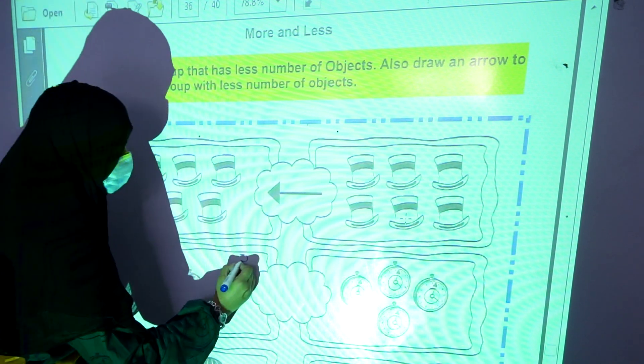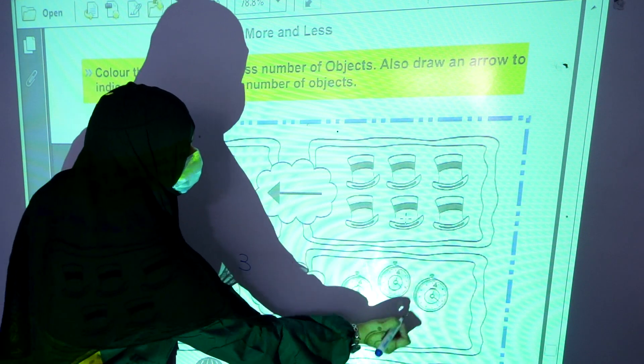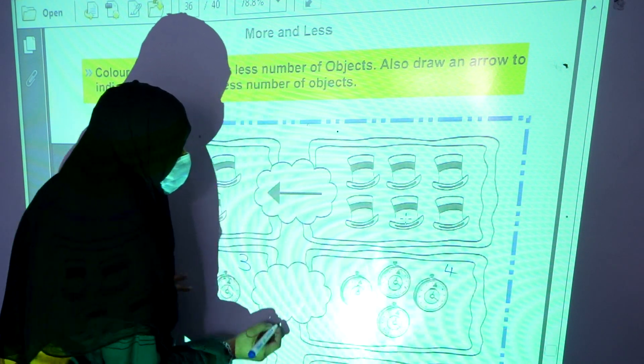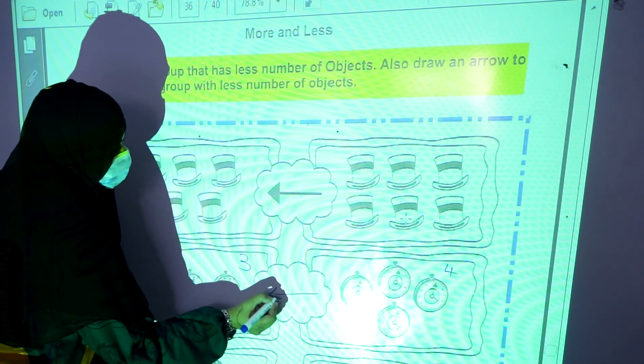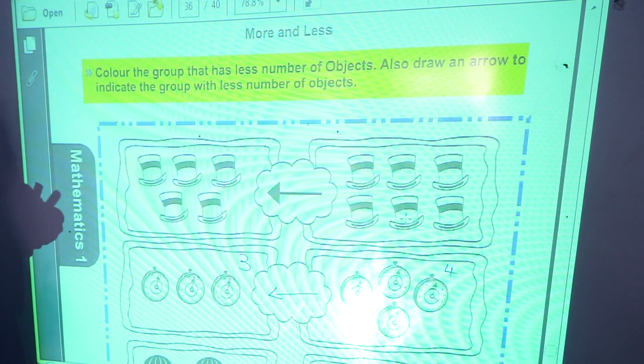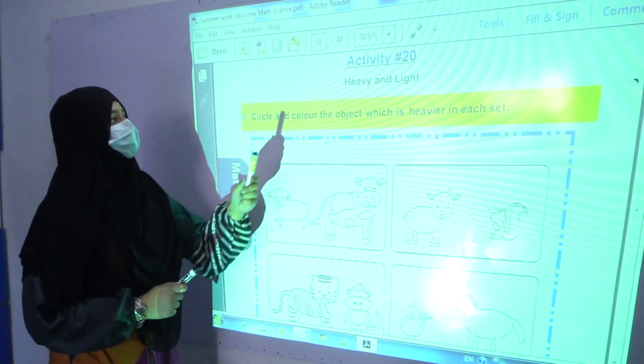1, 2, 3. These are 3. 1, 2, 3, 4. These are 4. Indicate an arrow to the lesser one. In this way, you will complete your activity.